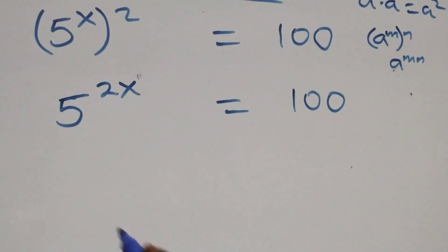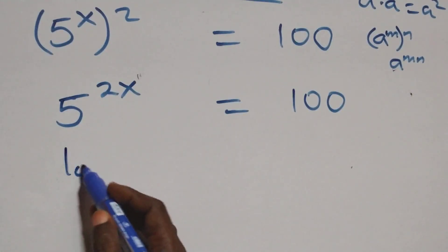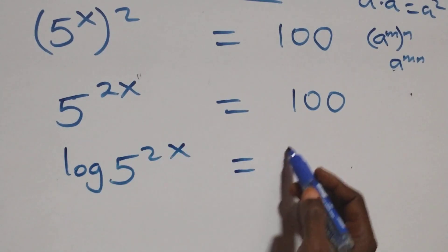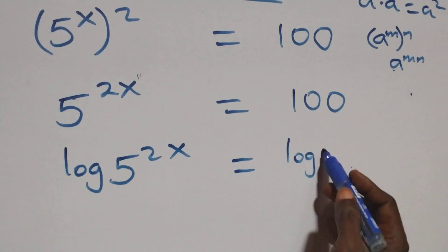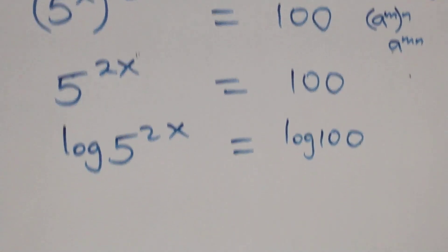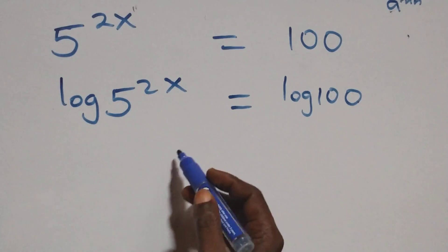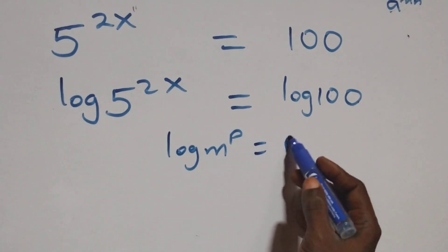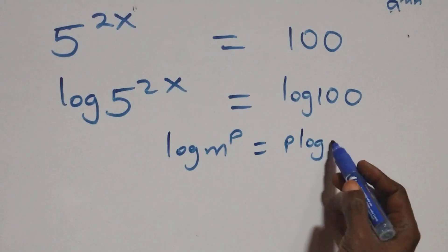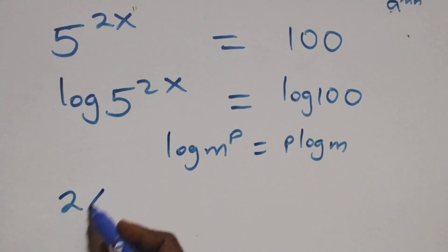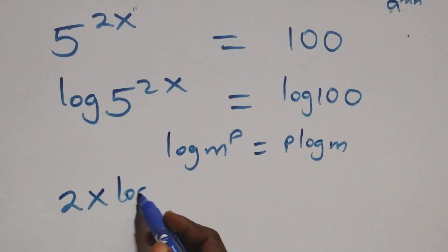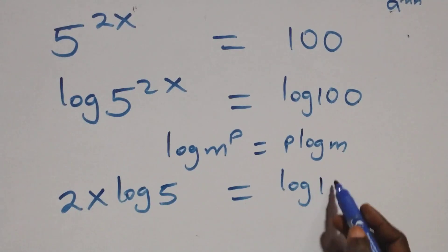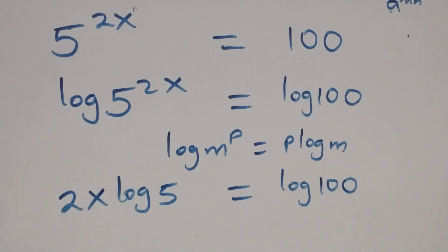The next step: we take the log on both sides. We have log of 5 raised to power 2x equals log 100 on this side. Then we apply the power rule of logarithms, where log of m raised to power p is the same thing as p times log m. All we have here becomes 2x log 5 equals log 100 on this side.